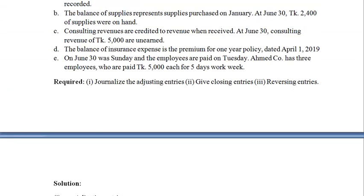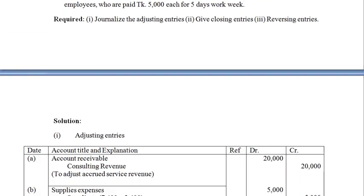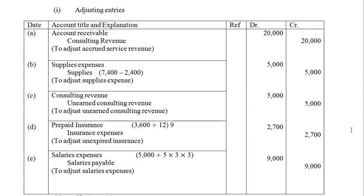This is the reversing entries section. The first time you have to use the adjusted entries. You have given the adjusted entries. Which entry is reversed? The second requirement is the prepaid expense. The prepaid expense is reversed. The prepaid expense is not earned.